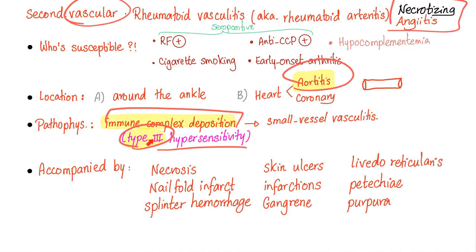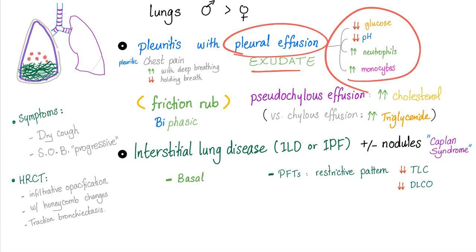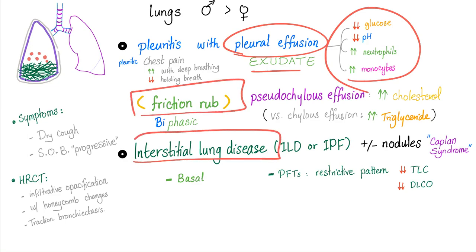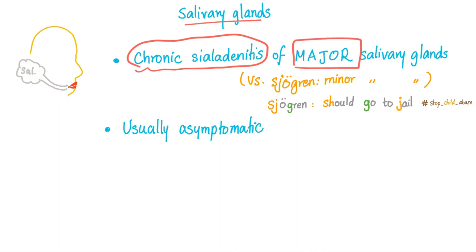Rheumatoid is generally type 4 hypersensitivity, but when immune complex deposition occurs it is type 3 — so it can be both. For the lungs, remember pleural effusion and know its characteristics, friction rub, and interstitial lung disease or fibrosis. For the salivary glands, you can have chronic sialadenitis of the major salivary glands.